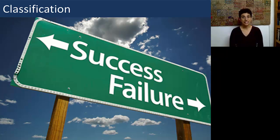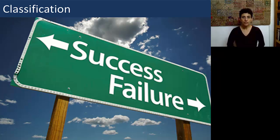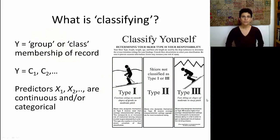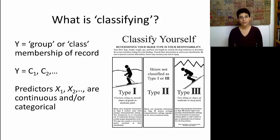Let's start talking about classification. This means we're going into supervised learning, where we have an output and a set of inputs. When we talk about classification, we're talking about a categorical output, where Y is either a group or a class, which means we're talking about a membership for each record.